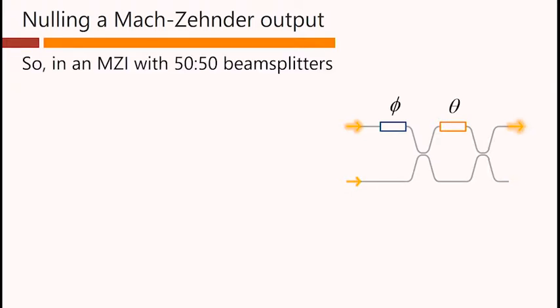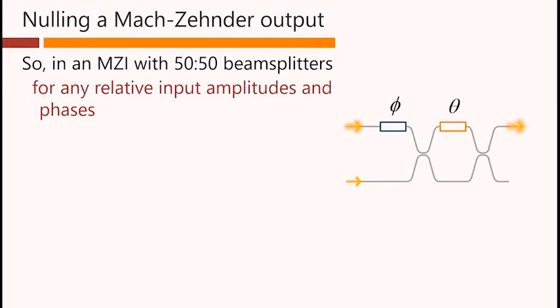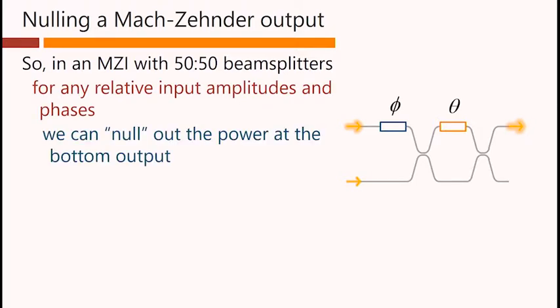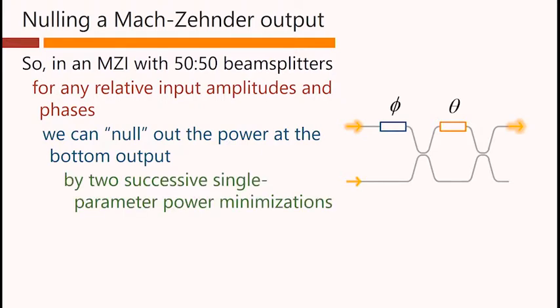So, in a Mach-Zehnder with 50-50 beam splitters, for any relative input amplitudes and phases, we can null out the power at the bottom output, by two successive single-parameter power minimizations, first using phi, and second using theta.